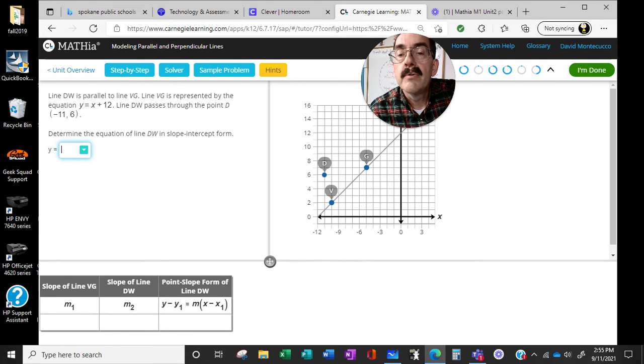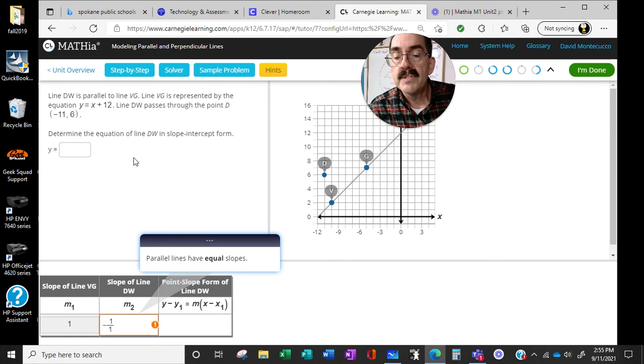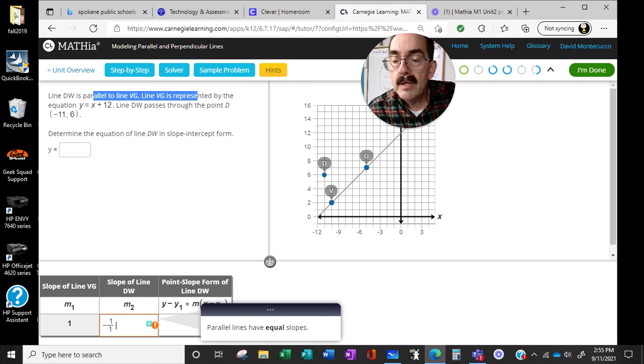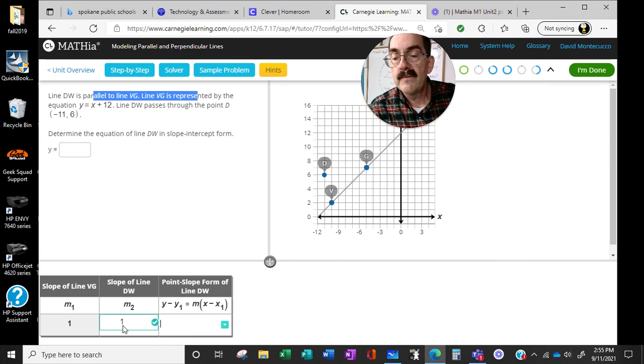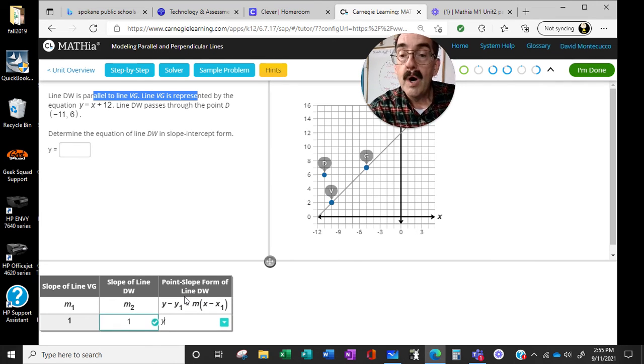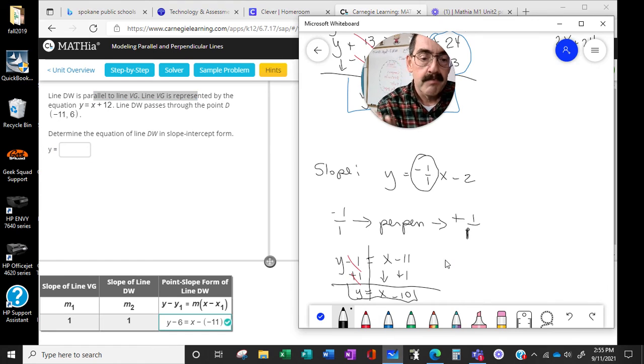All right, so X plus 12 going through the point D. It's got to be perpendicular. So the slope of the first one is 1 over 1. The slope of the second one is going to be negative 1 over 1. Negative reciprocal. EW is parallel. Oh, ah. Throw me a curve. Throw me a curve. It's parallel. So Y minus 6 equals 1 parenthesis X minus negative 11. We're happy. Pull up our little sheet over here. Y minus 6 equals X minus negative 11.